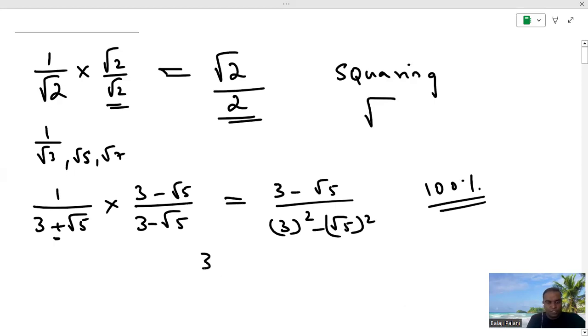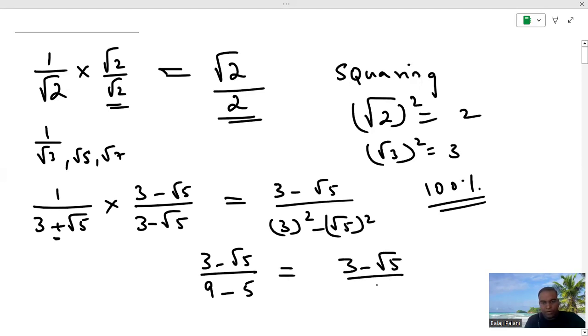So what happens to the numerator will change. It is 3 minus root 5. You know you have 3 square minus root 5 square. And you have to get to know that any irrational number when squared just comes out of the root. Don't write it as root 9 and then write 3. It is directly 3. Root 5 whole square is not root 25. In fact, it is root 25. But directly we get 5. So the final answer will be 3 minus root 5 divided by 4.